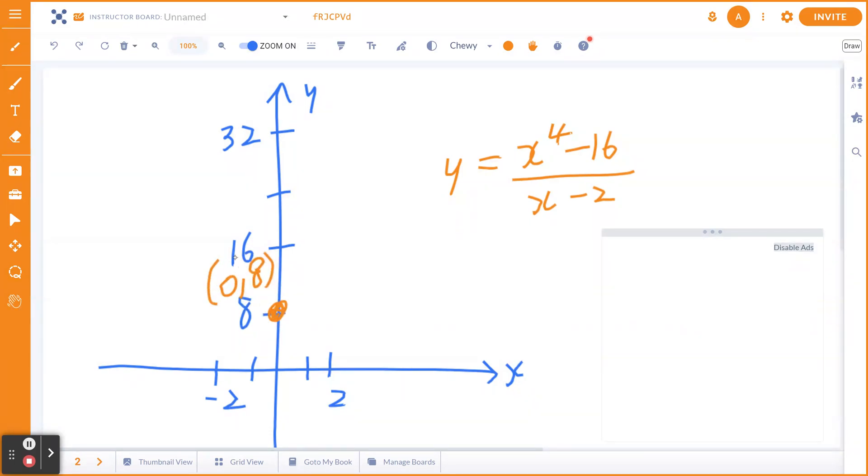And if I think about the x-intercept, one of them for sure right here is going to be negative 2 and 0. And you will discover there's going to be a cavity, a hole specifically at 2, 32.